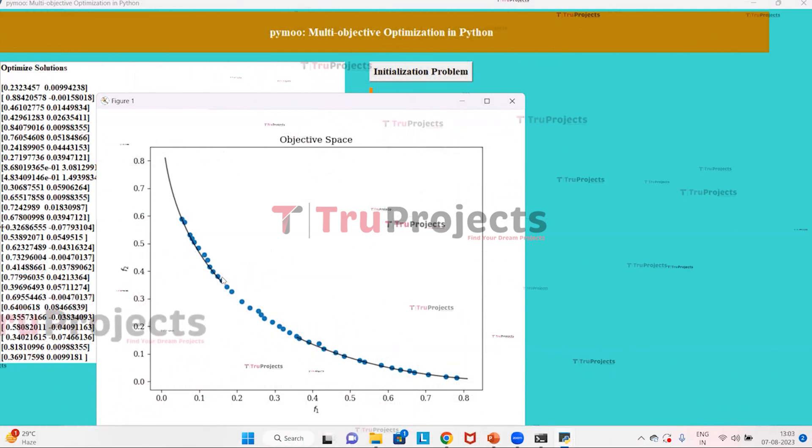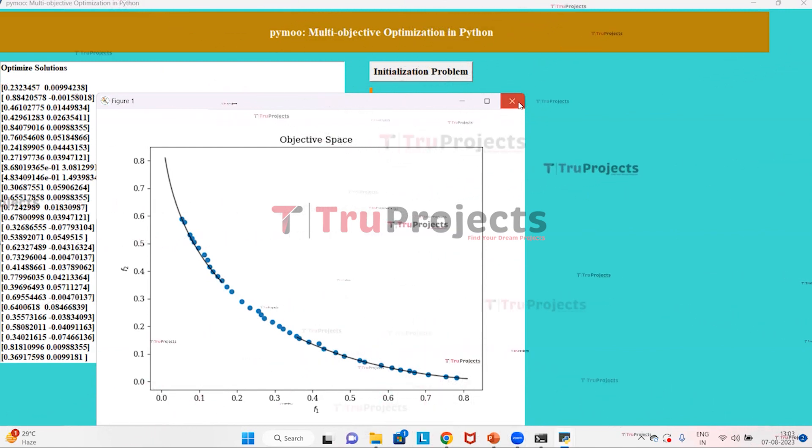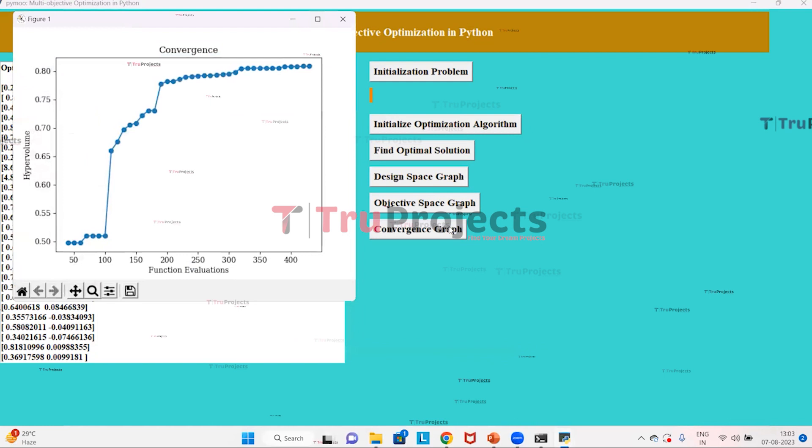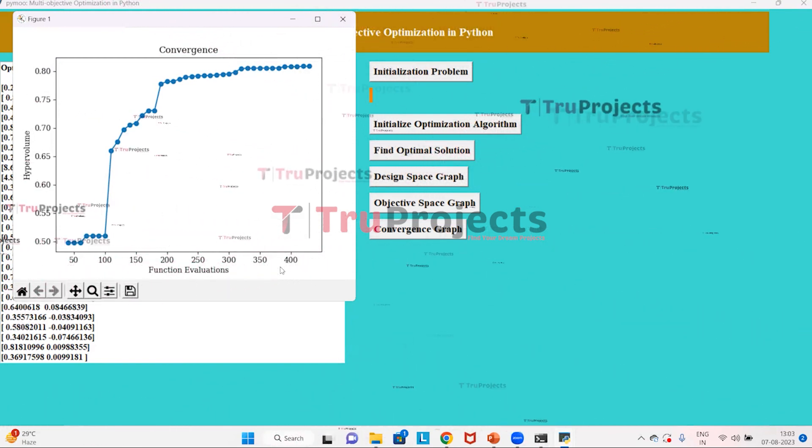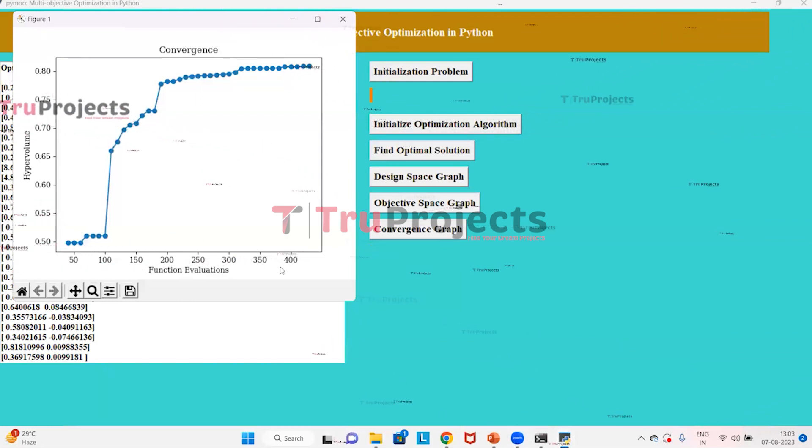Now click on the convergence graph button to get the graph. Here in the code, we have given the generation value as 10 and population value as 40, so 10 times 40 is 400. Here we have 400 iterations. In the graph, the x-axis represents the iterations and the y-axis represents the optimal solution. The line represents the count of iterations, and small circles represent the optimal solution found in that iteration.